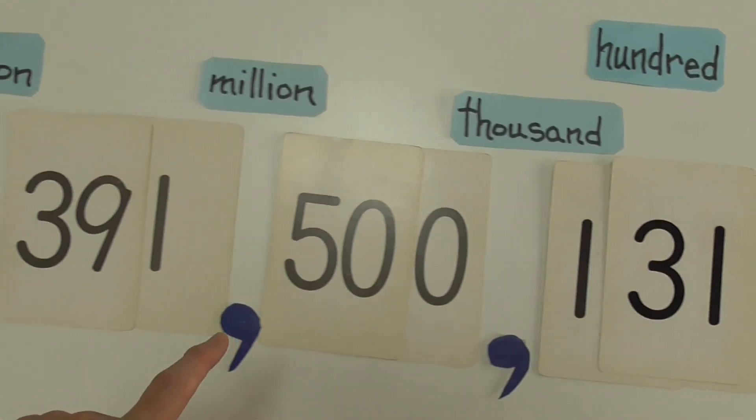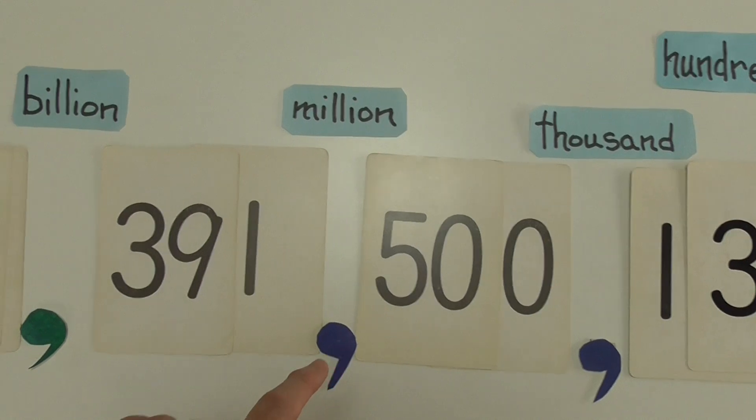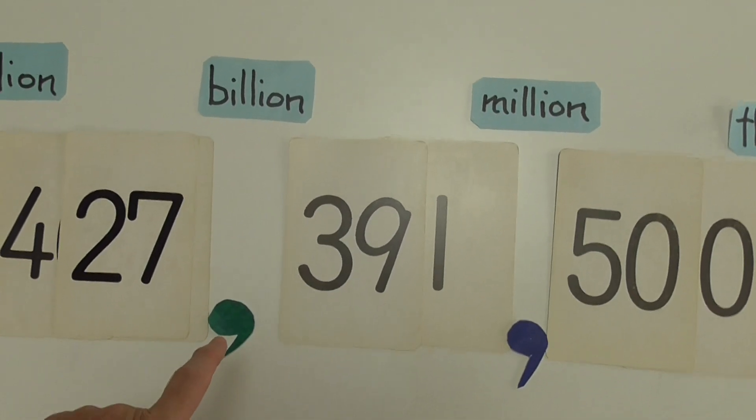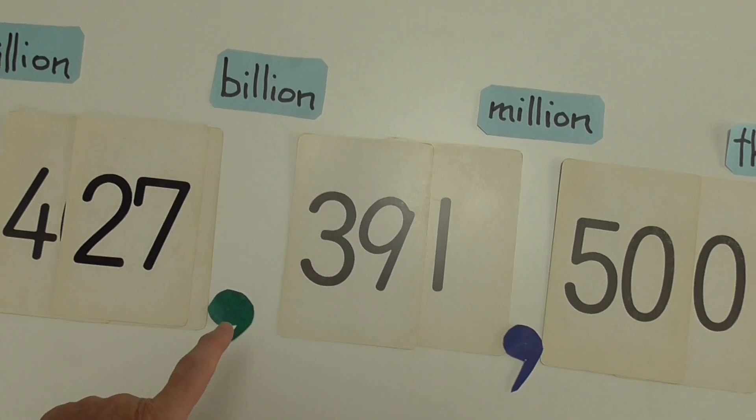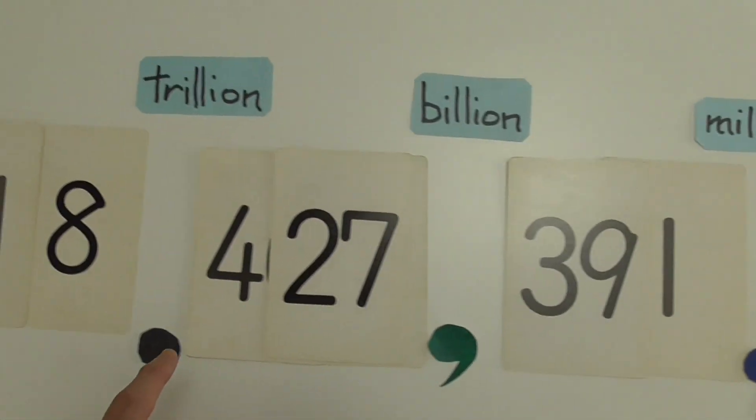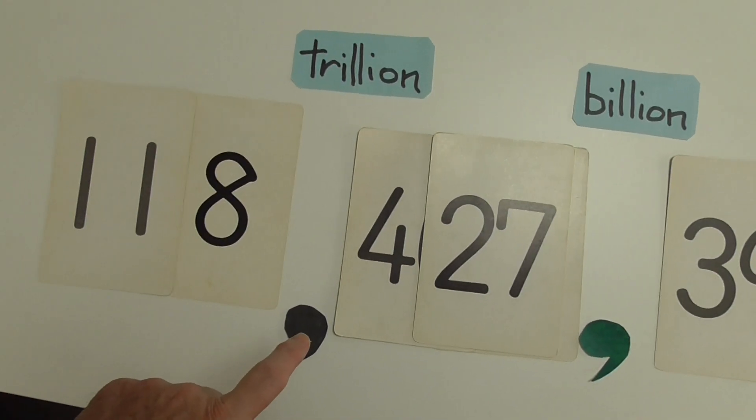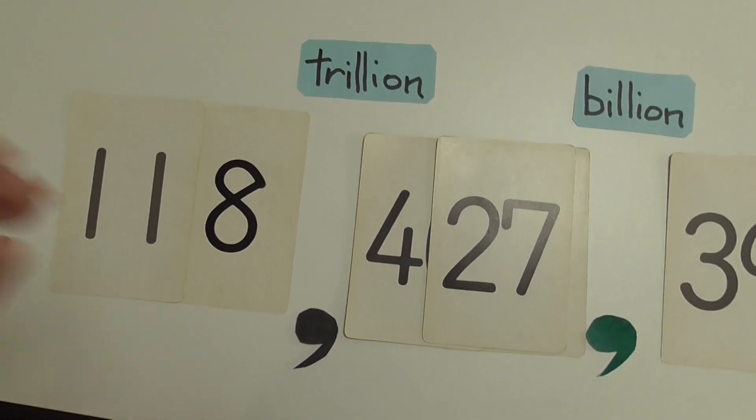So the first one's a thousand. The next one's a million. Next one's a billion. Next one's a trillion. After that, you don't need it.